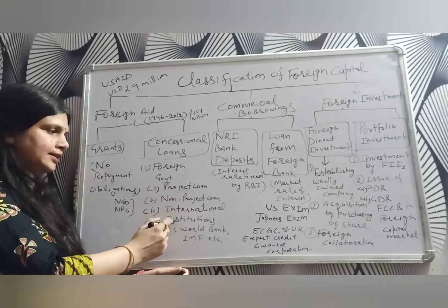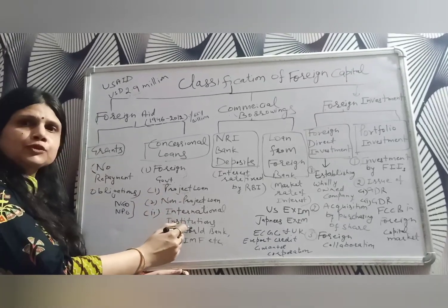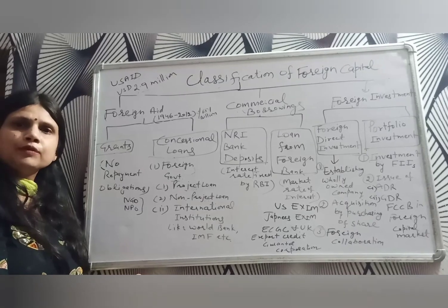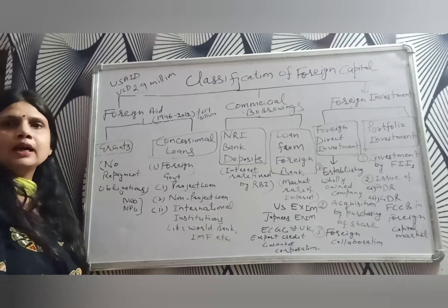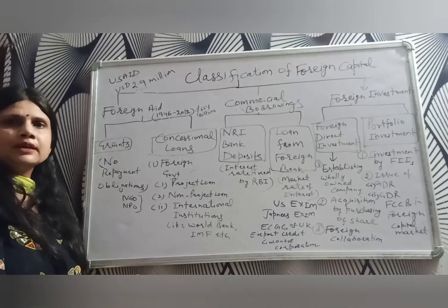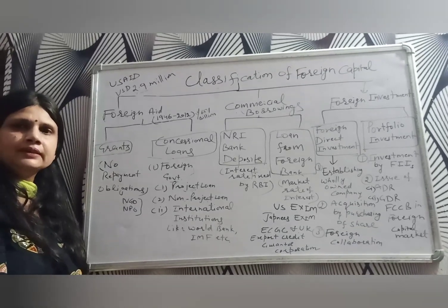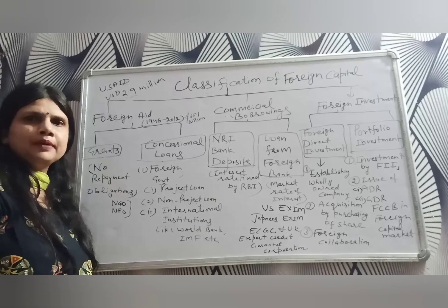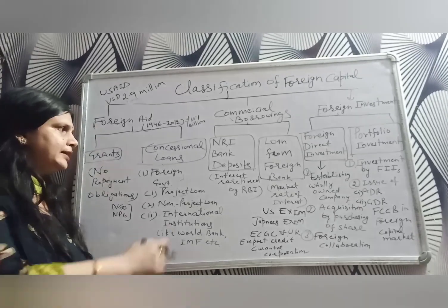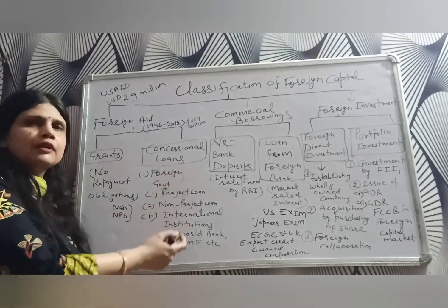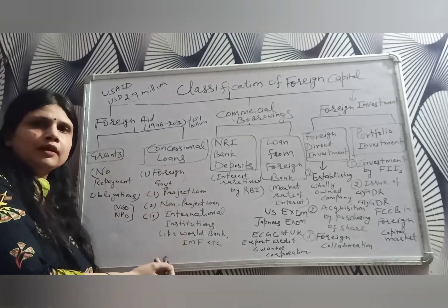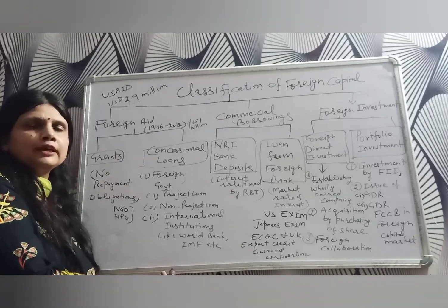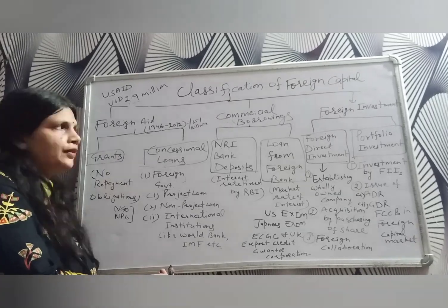The second source of concessional loans is international institutions such as the IMF (International Monetary Fund), the World Bank, and Asian Development Banks. These institutions also provide concessional loans to public and private organizations in India.